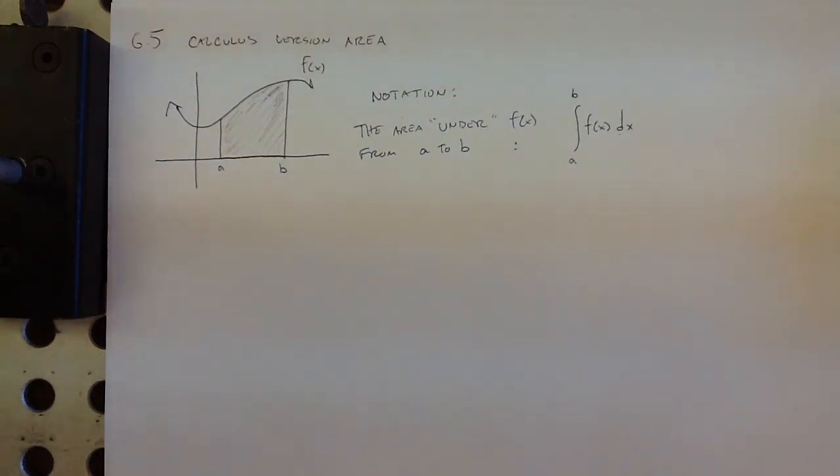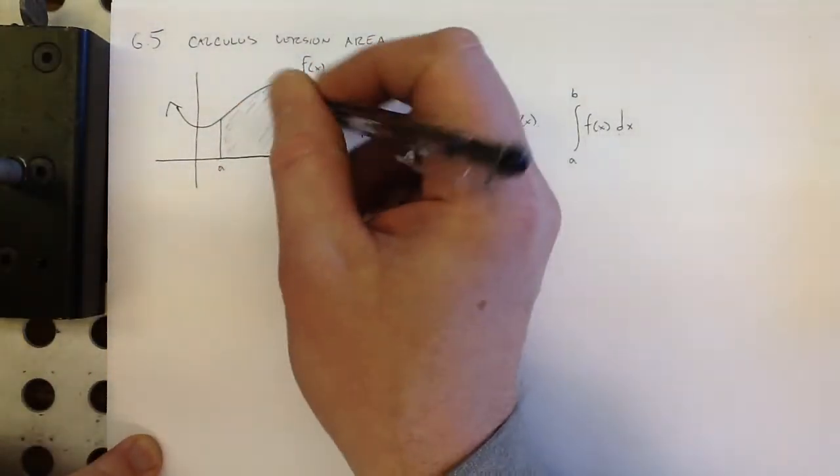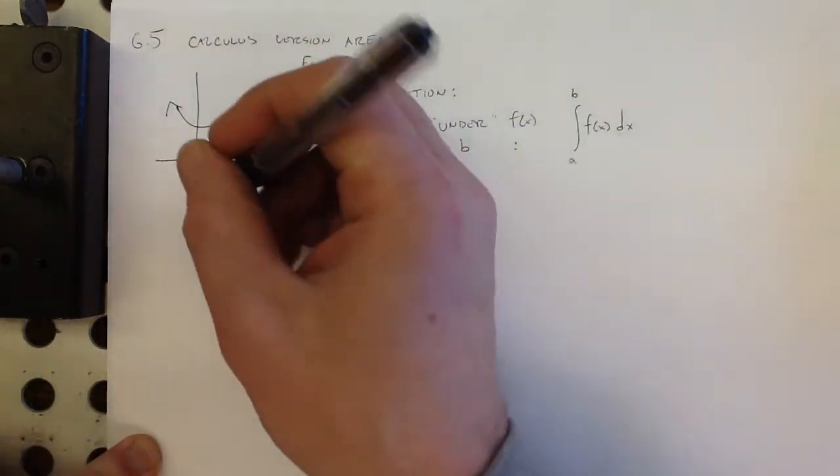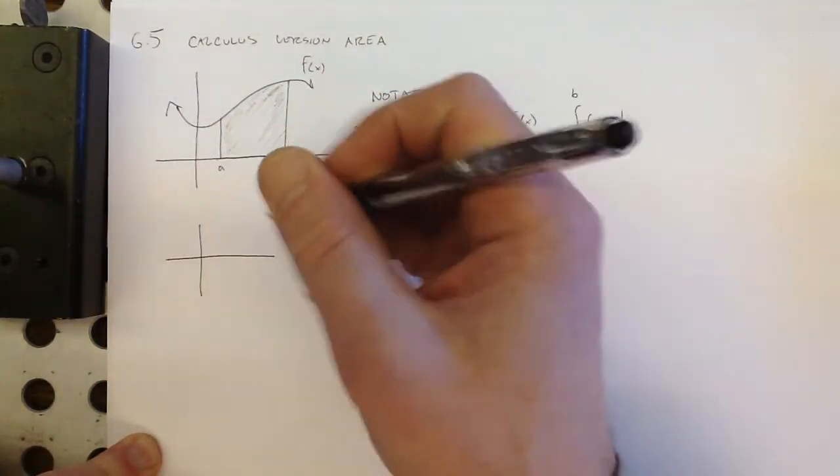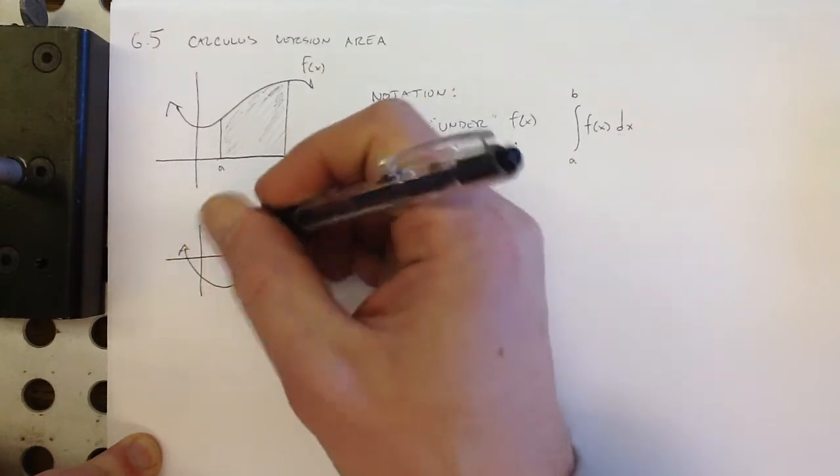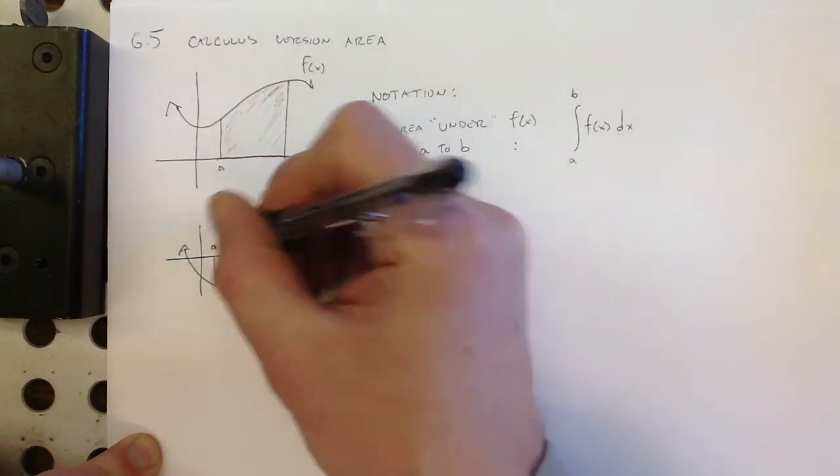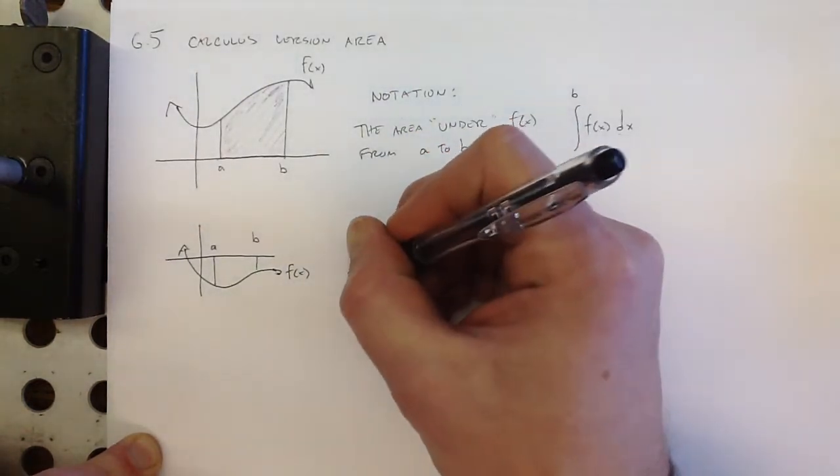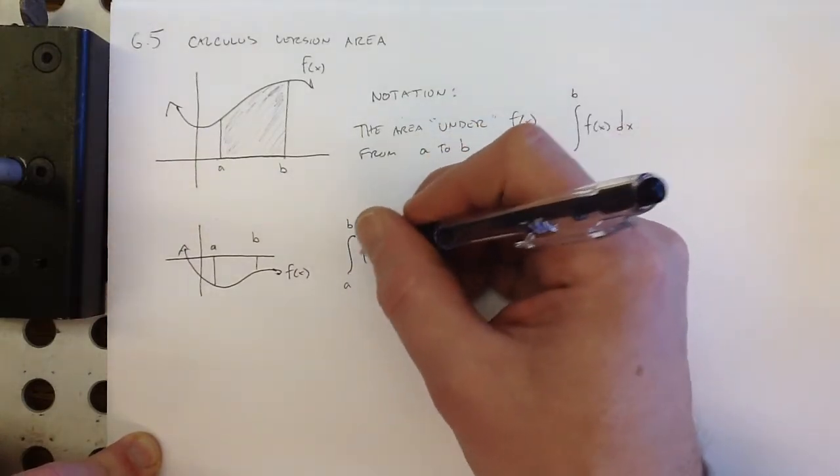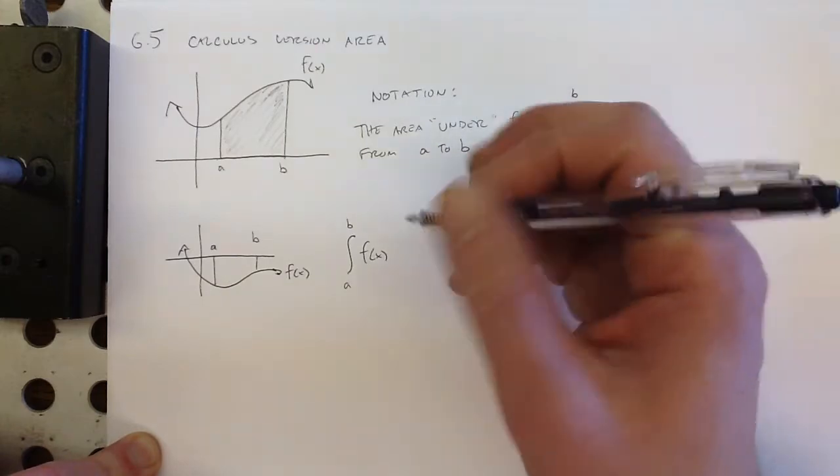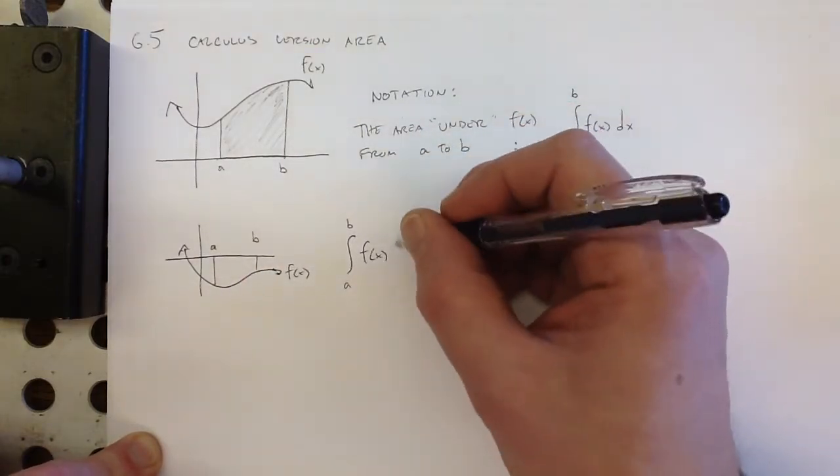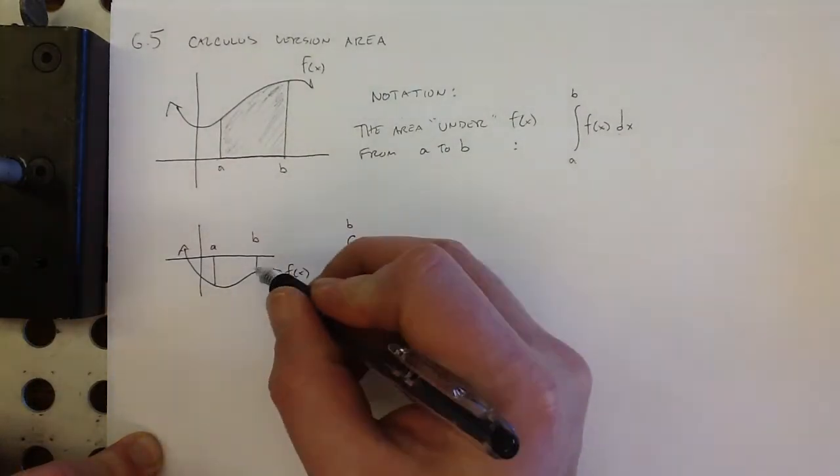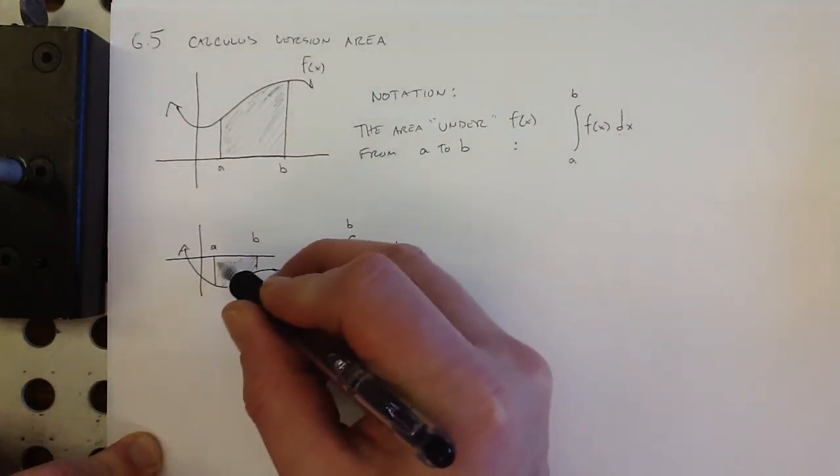Now, a lot of the time when we introduce some kind of notation like this, there are some consequences. This is all fine and good - this looks like a nice, well-defined, positive area. But what about if we have a function like this, where the area is below the x-axis? What does this mean? We're talking about the area between the curve and the x-axis.